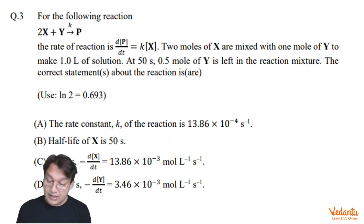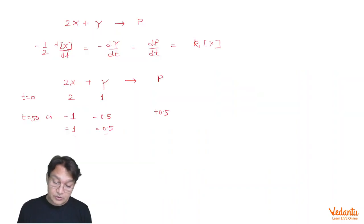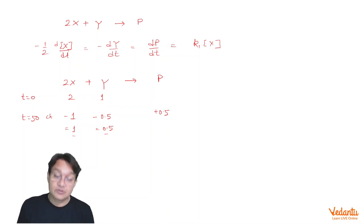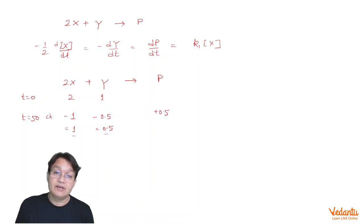Let us see how to approach and solve this problem. For 2X + Y → P, we can write the rate expression as: (1/2)(dx/dt) = −(dy/dt) = dp/dt, which equals kX.